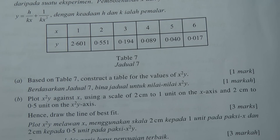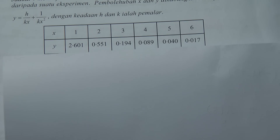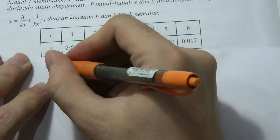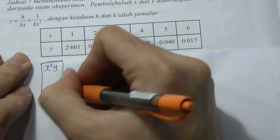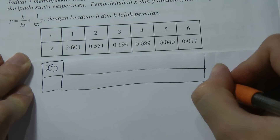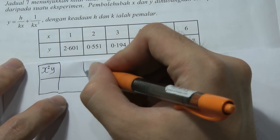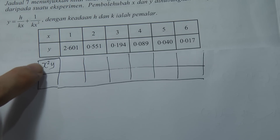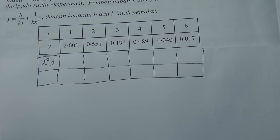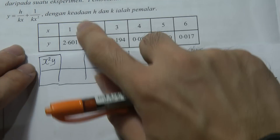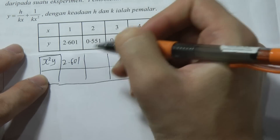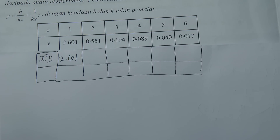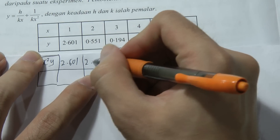So you just construct according to what he wants — a table for x²y. What is the meaning of x²y? You press the calculator: x squared y means multiply x two times, then multiply by y. The first value: 1×1×2.601 = 2.601. Next: 2×2=4, and 4×0.551 = 2.204.